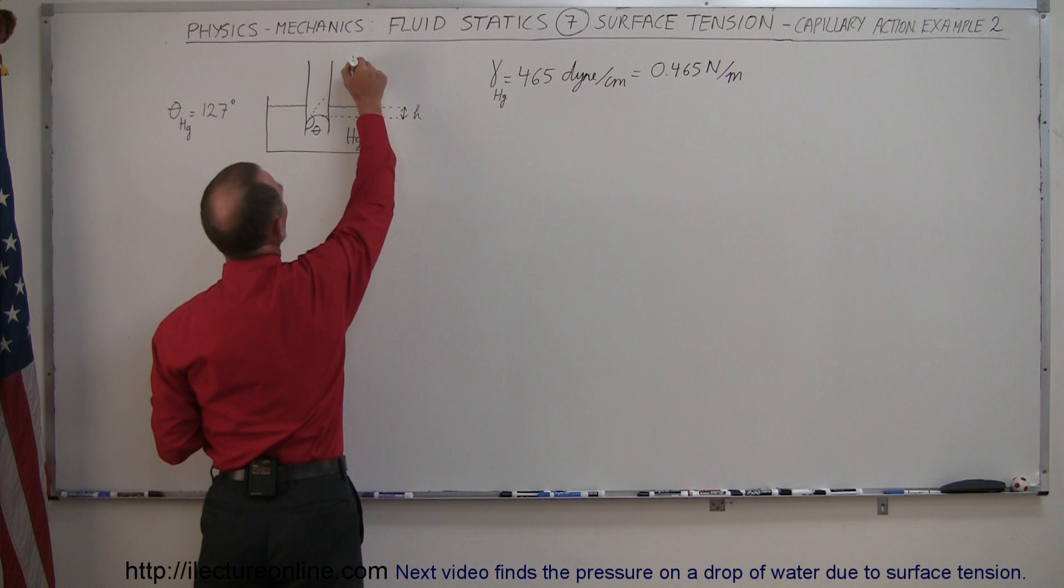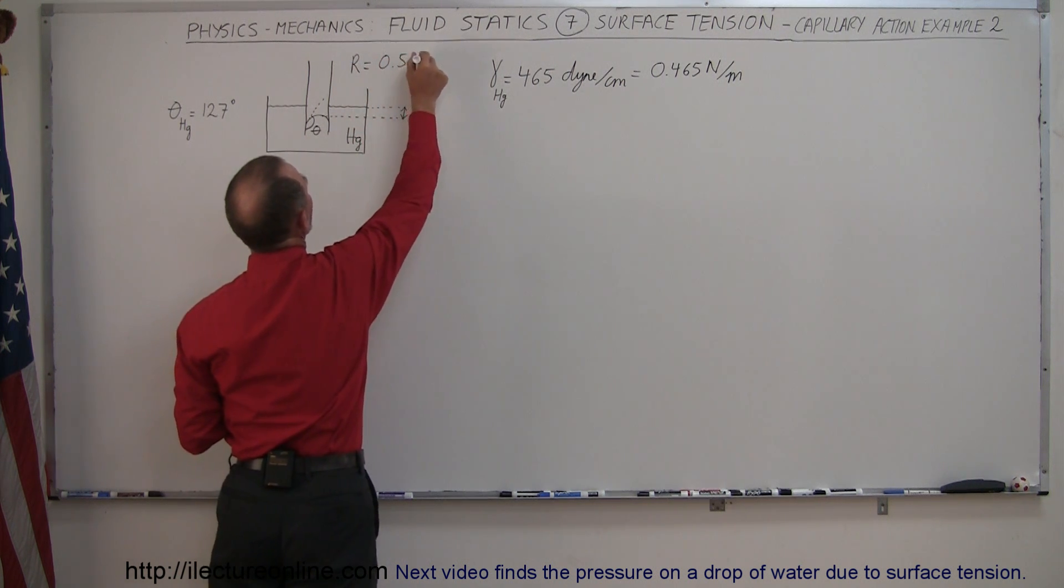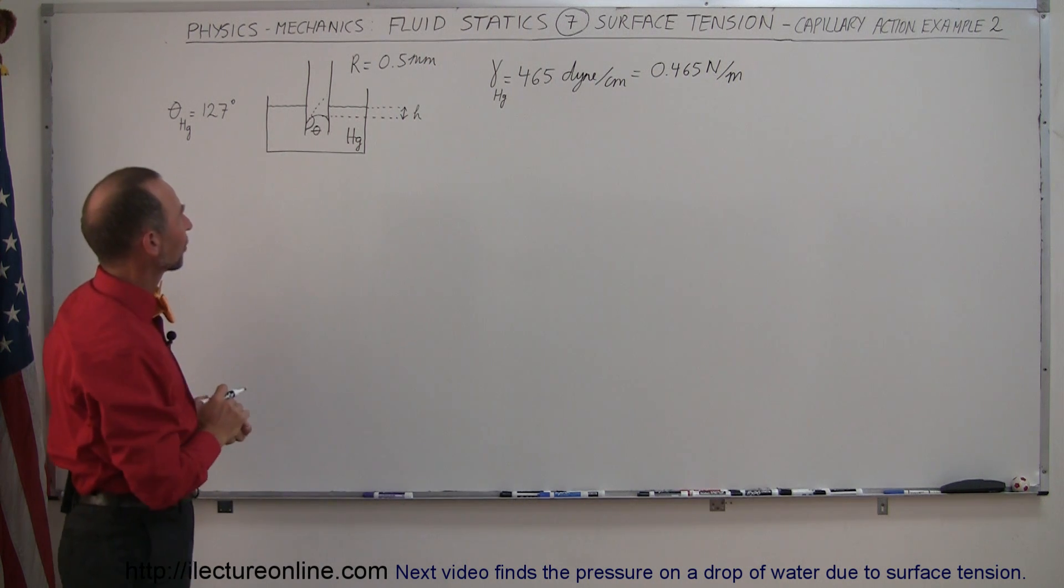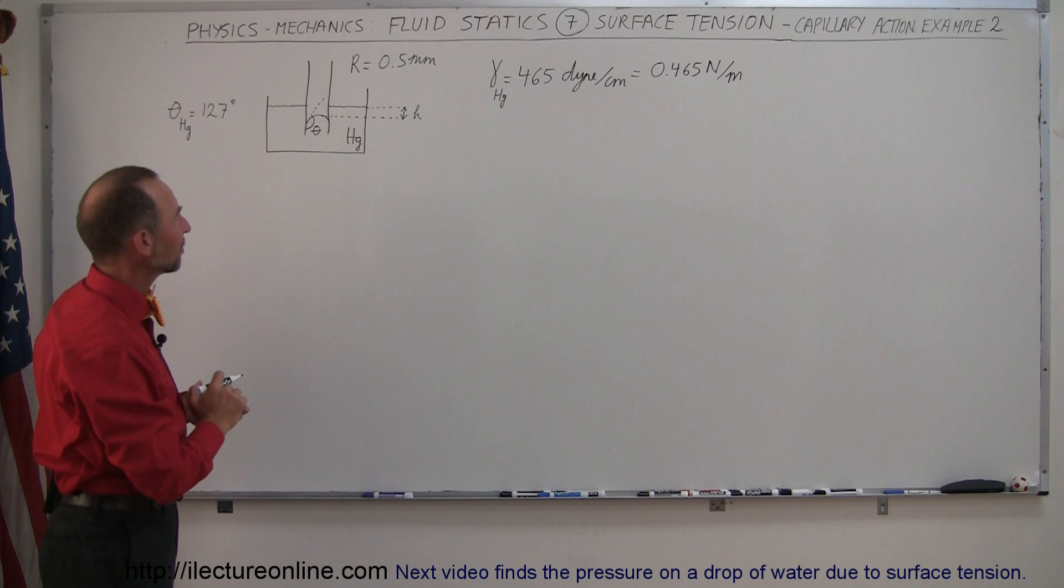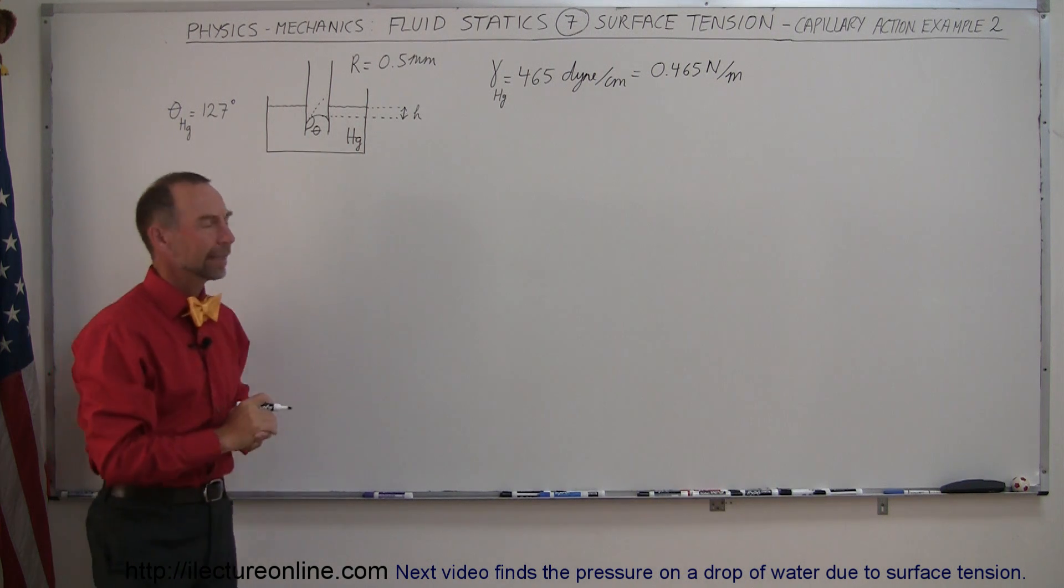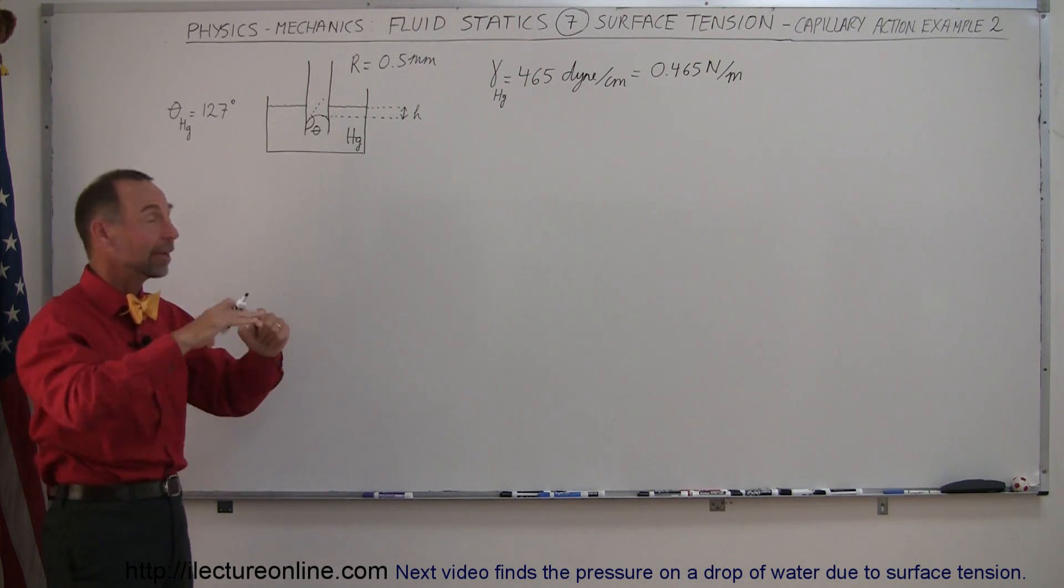Let's say that the radius of the capillary tube is 0.5 millimeters. And knowing that the density of mercury is 13.6 grams per cubic centimeter and that is the surface tension coefficient for mercury in dynes per centimeters and newtons per meter, let's find out how far down it gets depressed.